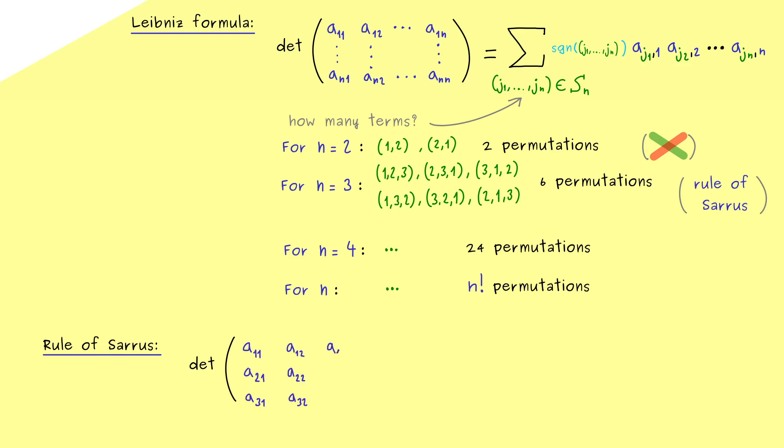Ok so now we already know we need a 3 times 3 matrix here. Therefore let's fill in all the entries here and you already see sometimes we write the indices with comma and sometimes without. Of course it means the same thing and we only use the comma if there could be any confusion.